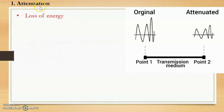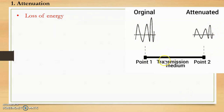The first cause is attenuation, which means loss of energy. The original signal will become weak or get attenuated. Whenever a signal is sent over a transmission medium, it loses some of its energy, and in other words we say the signal gets attenuated.